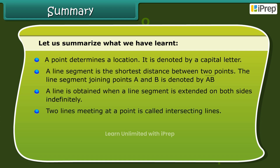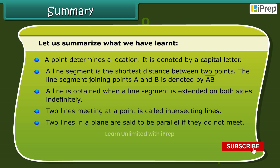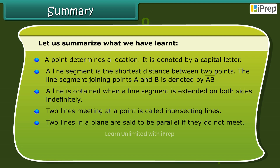Two lines meeting at a point is called intersecting lines. Two lines in a plane are said to be parallel if they do not meet.